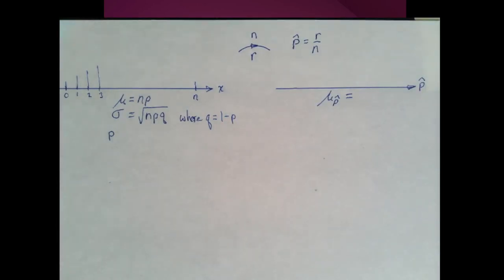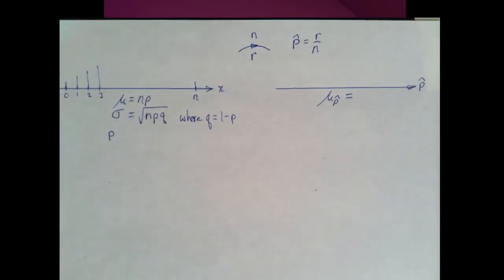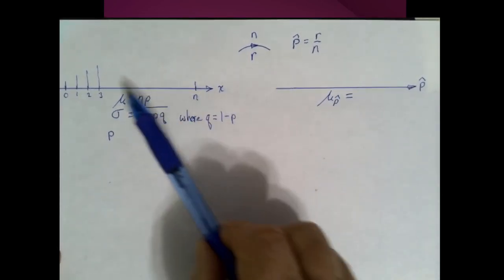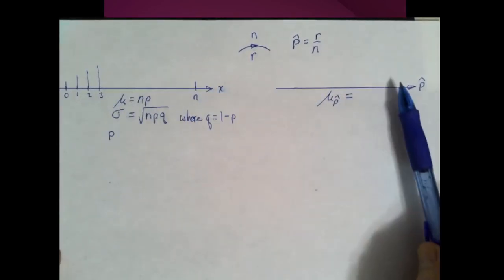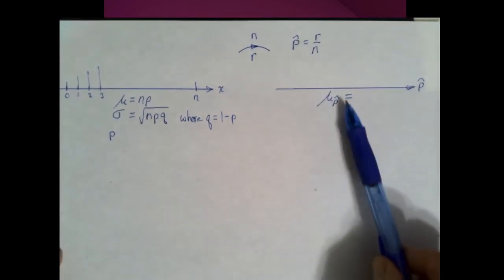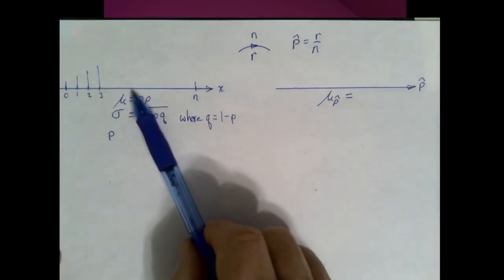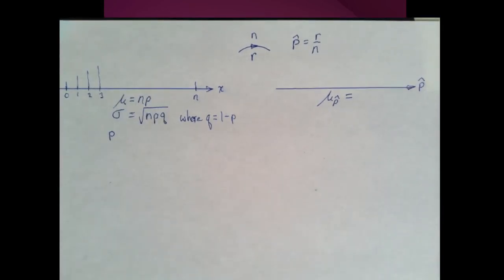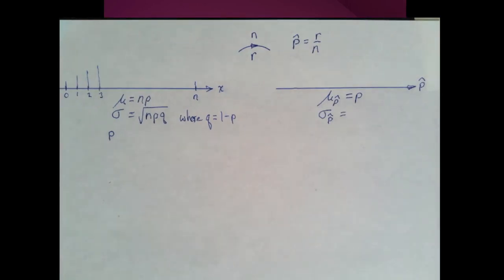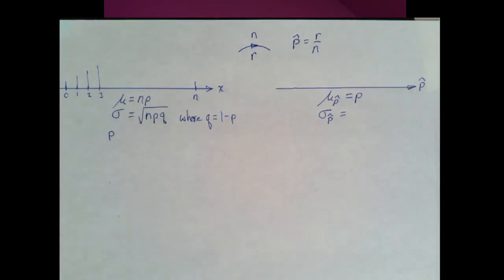Essentially, we're looking at the binomial frequency distribution and converting it to a relative frequency distribution by dividing by n. So the mean of all the sample proportions is going to be the binomial mean divided by n, which gives us p. And the standard deviation of the p-hats is the binomial standard deviation divided by n.